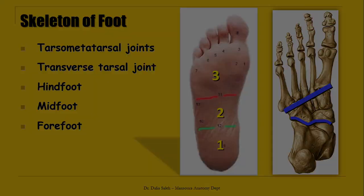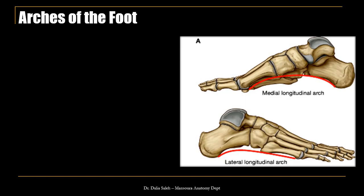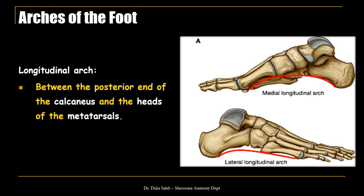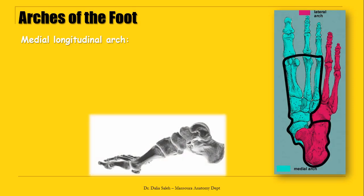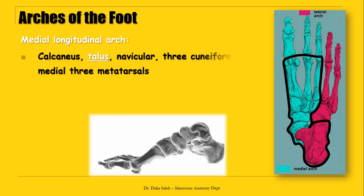For the arches of the foot, we have two types. The longitudinal arch extends between the posterior end of the calcaneus and the heads of the metatarsals. It is like one continuous twisted arch, but higher on the medial side than on the lateral side. The medial longitudinal arch is made by the talus as its keystone, its posterior pillar made by the calcaneus, and its anterior pillar made by the navicular, the three cuneiforms, and the medial three metatarsals.